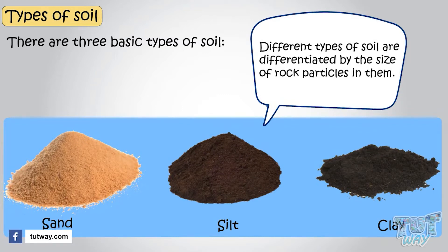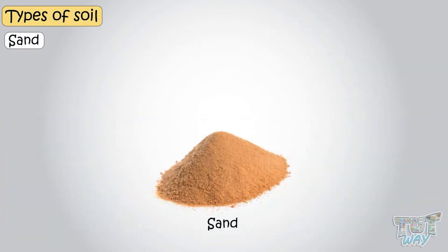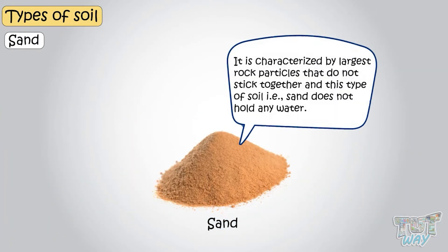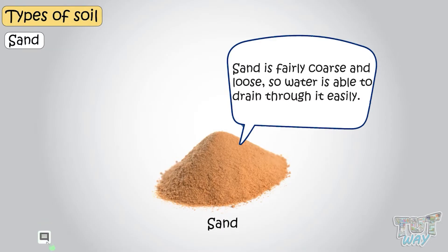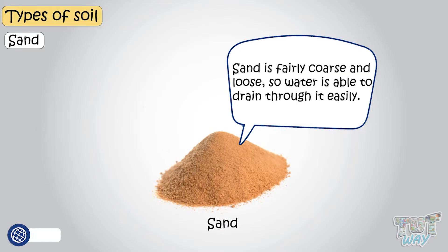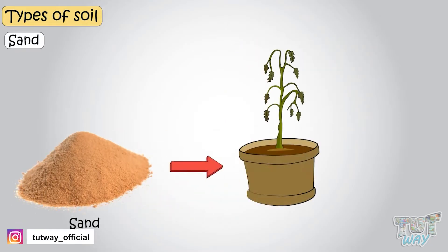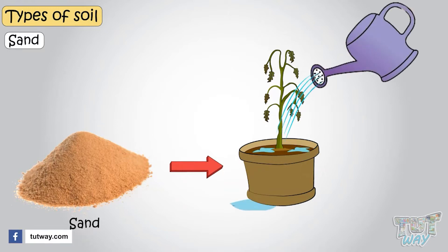Now let's learn about sand. It is characterized by the largest rock particles that do not stick together. Sand does not hold any water. Sand is fairly coarse and loose, so water is able to drain through it easily. While this is good for drainage, it is not good for growing plants, because sandy soil will not hold water or nutrients.